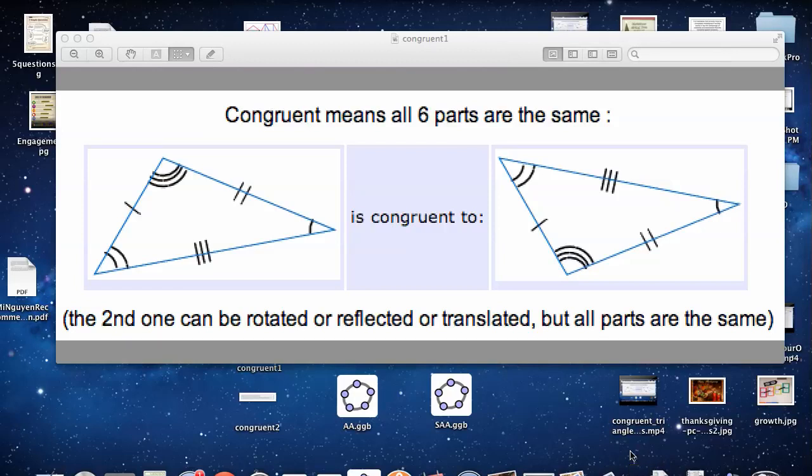I want to know what's the minimum that I could measure and they'd still be exactly the same. Now, if I only measure three and I get the same triangles, that still means all six are the same, not just the three that I measured. That's the whole point of congruency. What three can I measure so that all six will be the same?